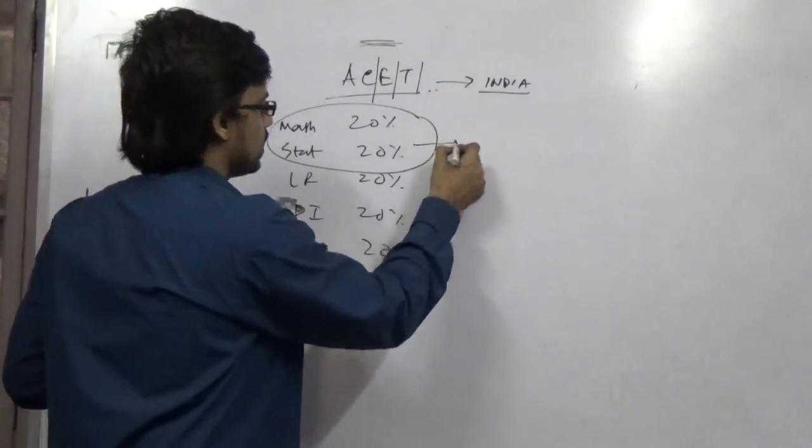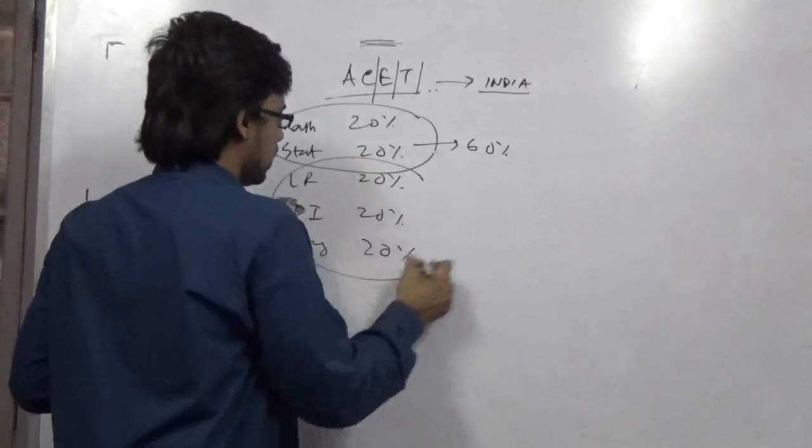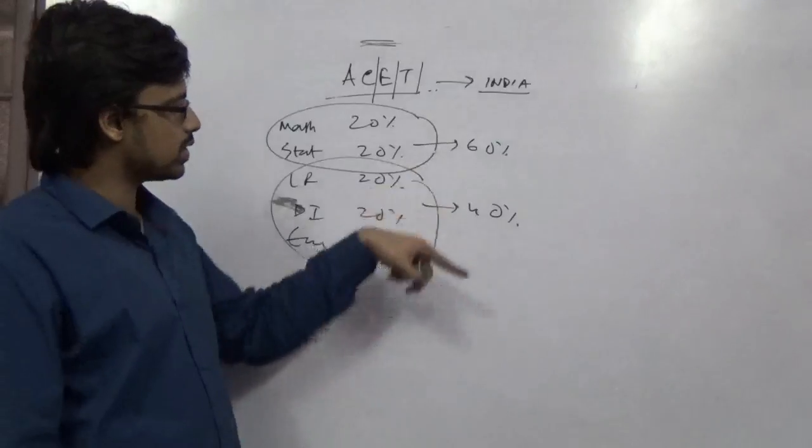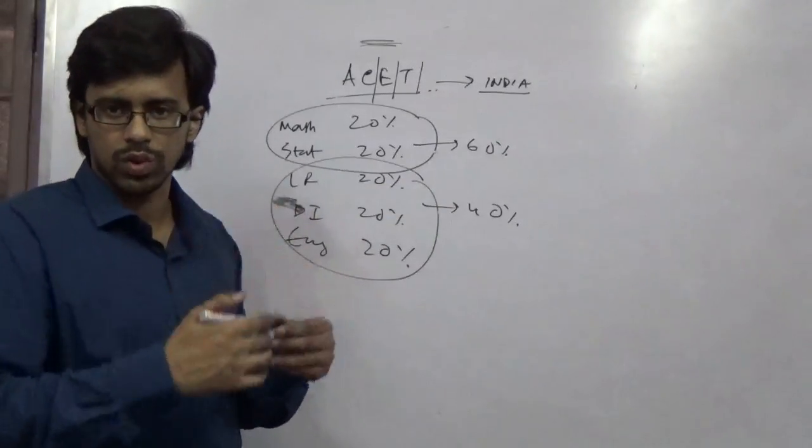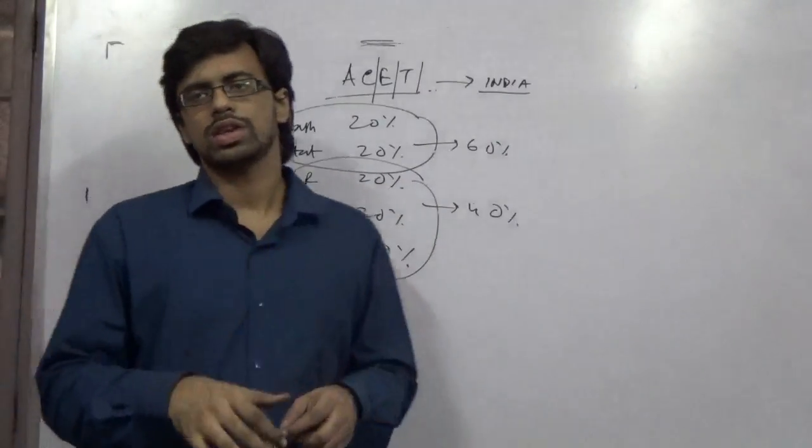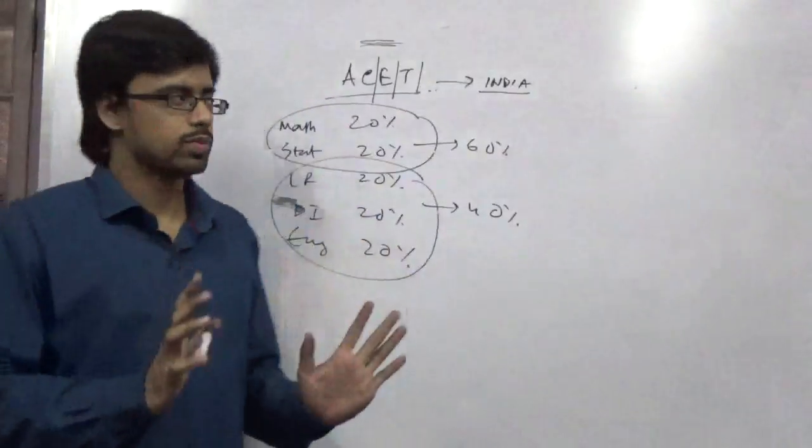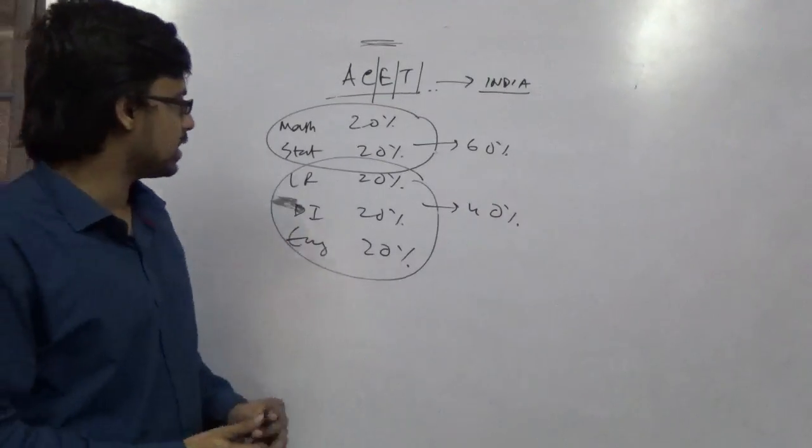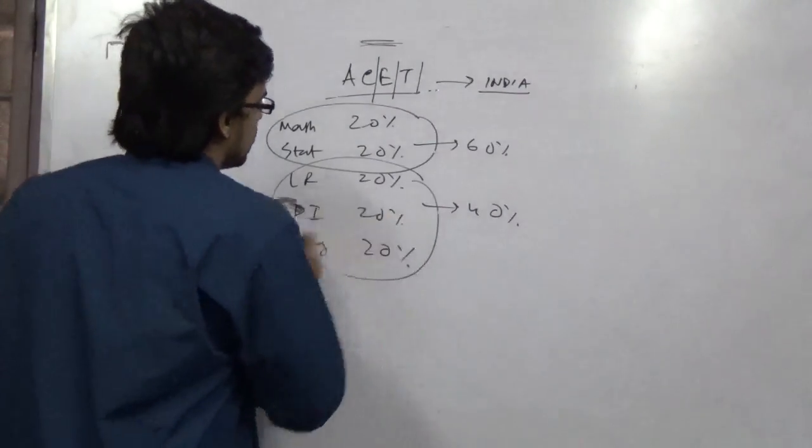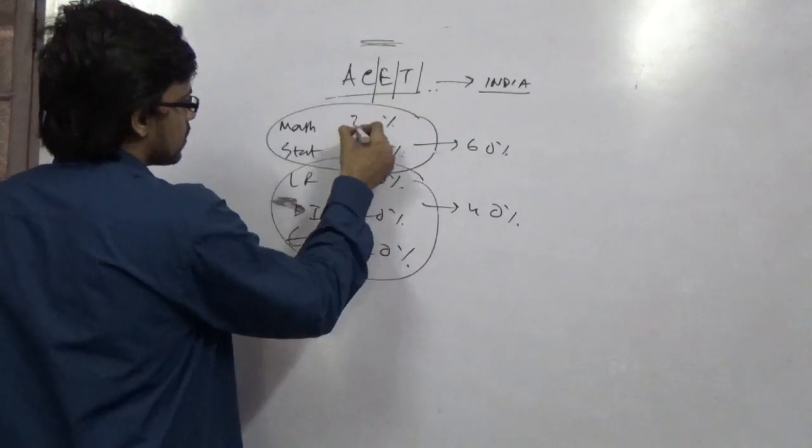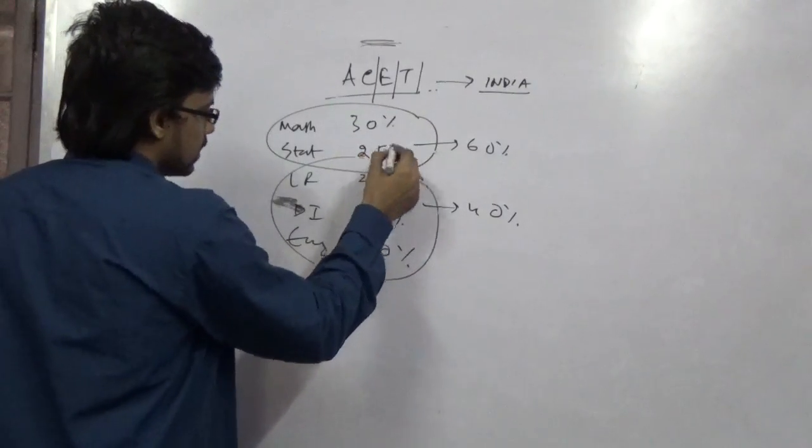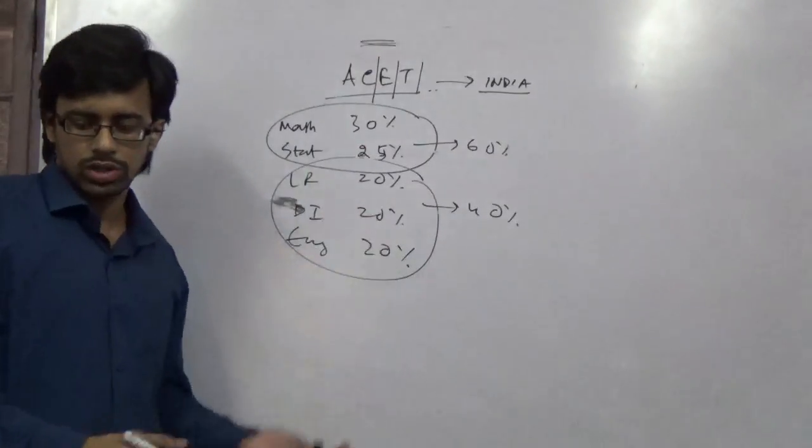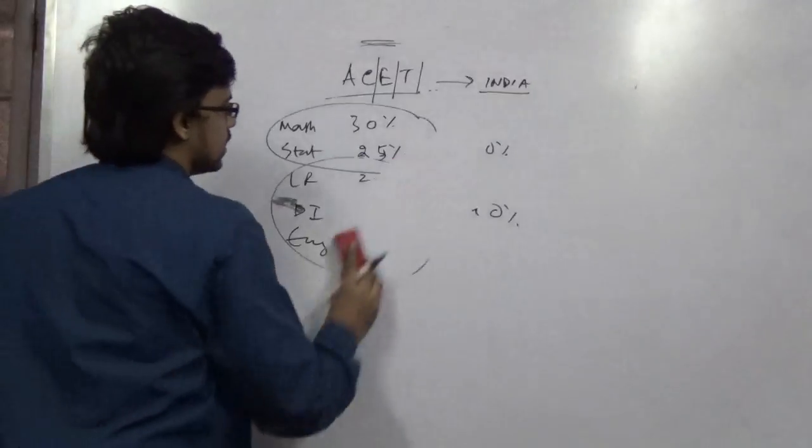This is an approximate value. They say that these two combined will come 60, these two combined will come 40. But in previous years examination it has been seen that the percentage has been jumbled up a little bit, so for your convenience I am taking everything to be 20. So Math, LR, DI. According to my pattern, sometimes they give it like this, sometimes comes 30, this sometimes has come 25, this changes to 25.